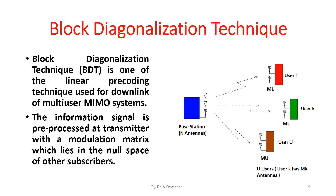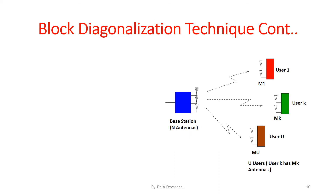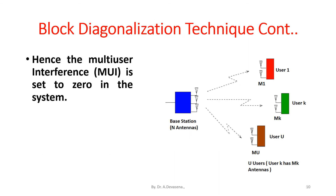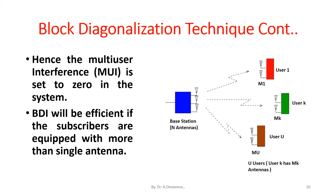In Block Diagonalization, the information signal is pre-processed at the transmitter with a modulation matrix which lies in the null space of other subscribers. Hence, the multi-user interference (MUI) is set to zero in the system.